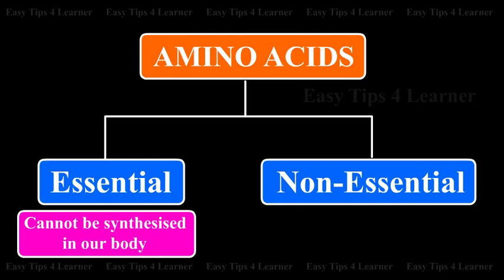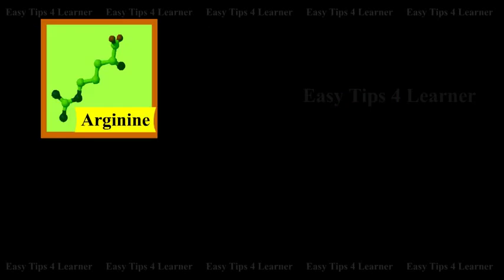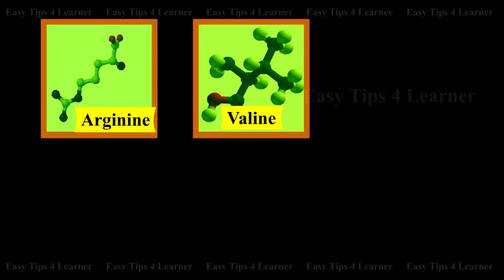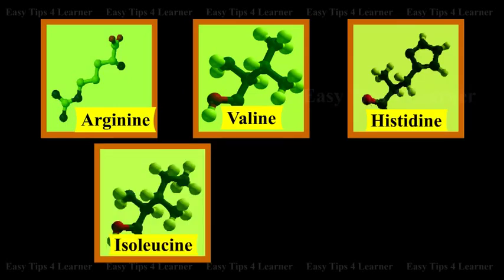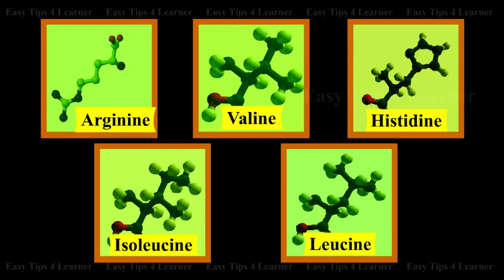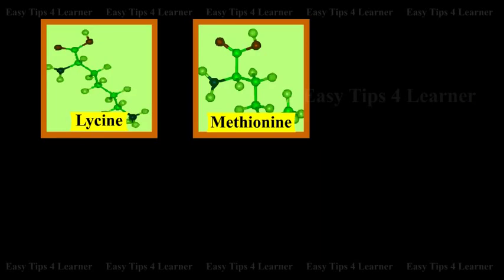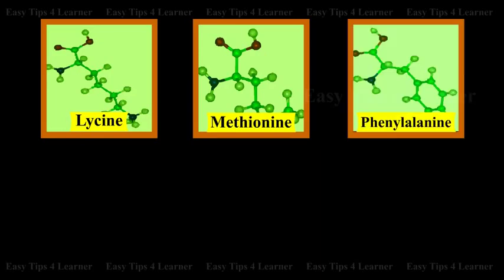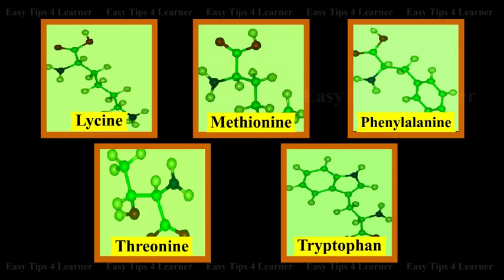The essential amino acids are arginine, valine, histidine, isoleucine, leucine, lysine, methionine, phenylalanine, threonine, and tryptophan.